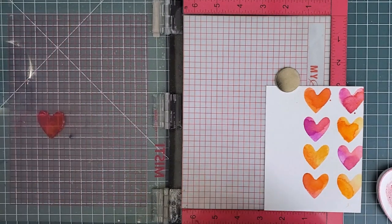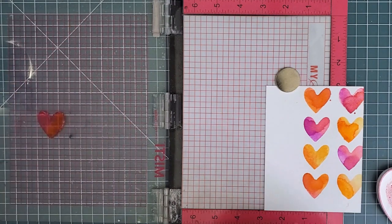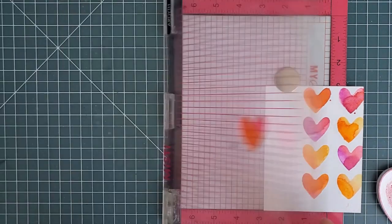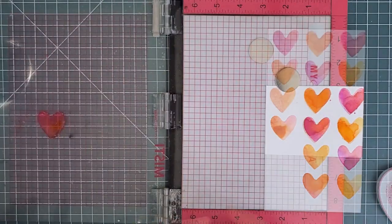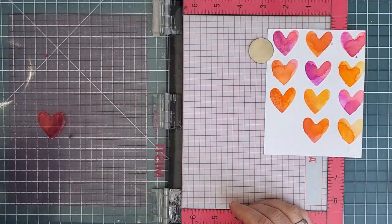I've got my cardstock hanging out over the right edge of the MISTI here, and if I'd been thinking I could have moved it back onto the mousepad and just lined up my stamp at that point, but this worked. I finished off the panel and let it dry completely.